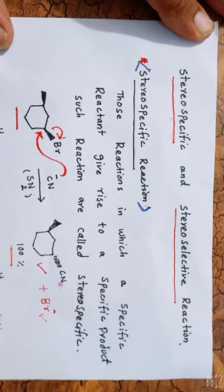The stereochemical outcome of a stereospecific reaction depends upon the stereochemistry of the reactant molecules or substrate. Simply, the stereochemistry of the product will depend upon the stereochemistry of the reactant in stereospecific reactions.